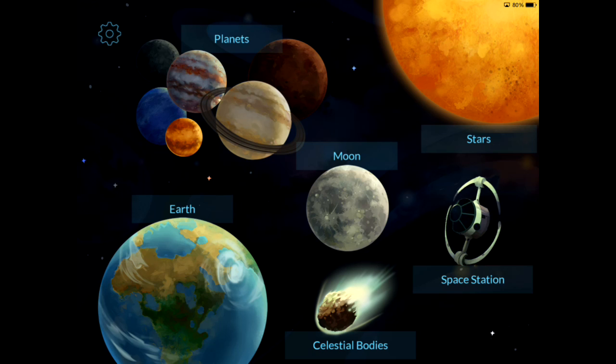It's available to download from the App Store for only $1.99, and this is the main screen of Arloon Solar System. As you can see, there are a bunch of different elements to learn about: Earth, planets, moon, etc.